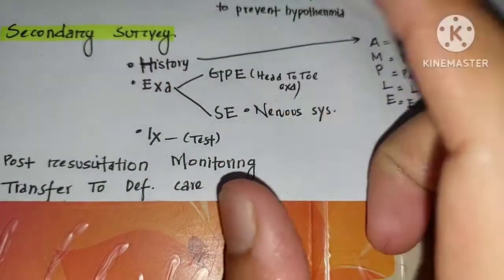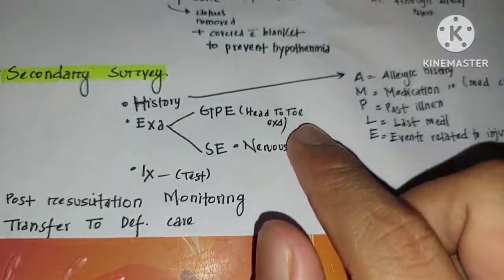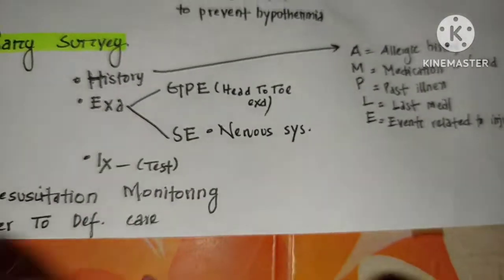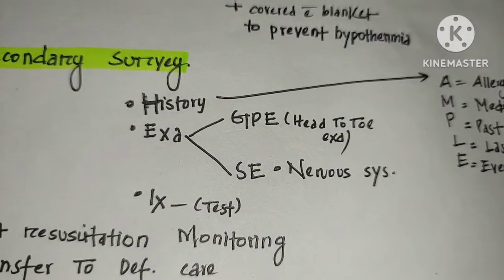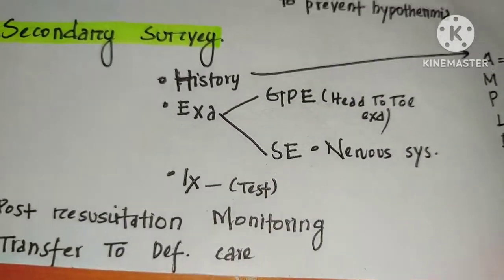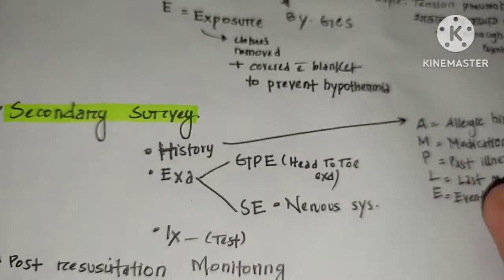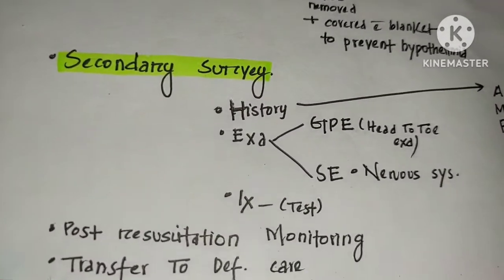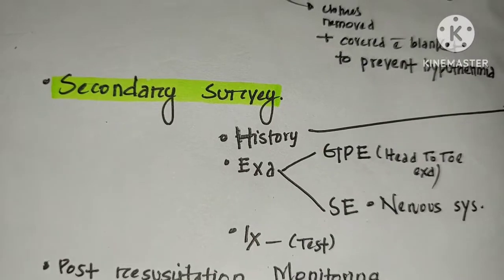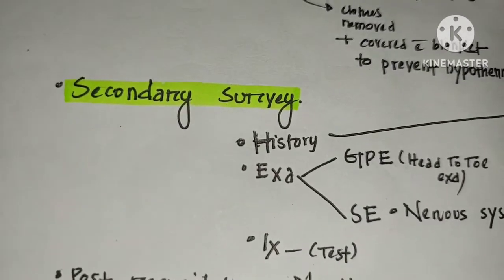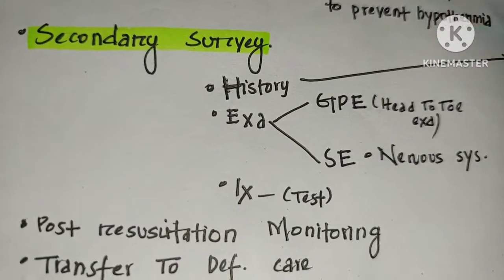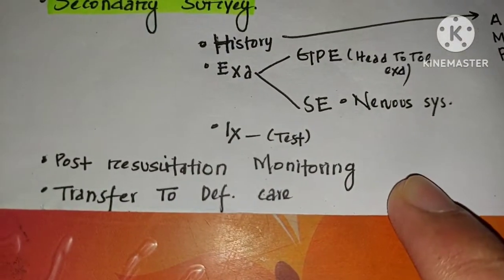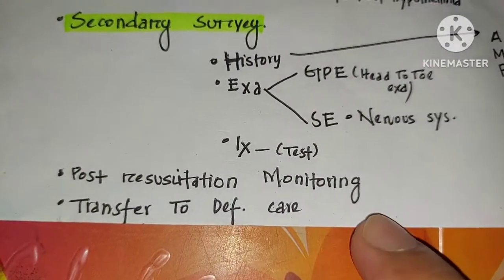Examination includes general physical examination with head-to-toe and systemic assessment, including the nervous system. We perform the patient's investigation. If there is a specific injury, we provide treatment for that specific injury. Once the patient is stable, we proceed with definitive care, post-resuscitation monitoring, and transfer to definitive care.